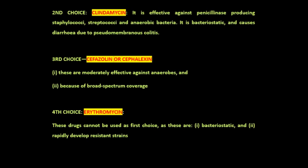Cephazolin or cephalexin is the third choice of antibiotics in osteomyelitis. It is effective against most cocci including penicillinase-producing staphylococci and gram-negative aerobic bacilli. Cephalosporins are not recommended as first choice because they are only moderately effective against anaerobes and their broad-spectrum coverage increases antibiotic complications like bacterial resistance and superinfection. The fourth choice is erythromycin, which also cannot be used as first choice because it is bacteriostatic and rapidly develops resistant strains.